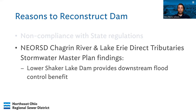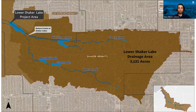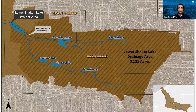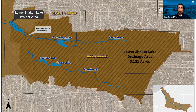In the sewer district's Chagrin River Lake Erie Direct Tributaries Stormwater Master Plan, it was determined that the dam provides downstream flood control benefit to Coventry Road, North Park Boulevard, and University Circle. The Lower Shaker Lake drainage area is 3,121 acres — the entire area drains to Lower Shaker Lake via storm sewers, stormwater runoff, and multiple branches of Domebrook. We refer to these as the North Branch, Middle Branch, and South Branch. The North and Middle branches confluence at Horseshoe Lake and flow into Lower Lake, while the South Branch flows through Green Lake and Marshall Lake before meeting at Lower Shaker Lake. From there, Domebrook flows through University Circle to Lake Erie.